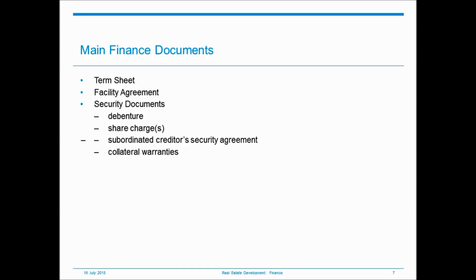The security package will generate several documents. The borrower SPV will sign a debenture, which broadly gives the bank various types of security over various assets owned by the SPV — including most obviously the site itself, the SPV's rights under key documents in the deal, insurances, etc. The JV partners will typically both sign a share charge giving the bank security over shares in the SPV, and will also often give the bank security over the benefit of their subordinated loans advanced into the SPV — what we've called the subordinated creditors security agreement. Collateral warranties are a key set of documents from the bank's perspective, designed amongst other things to give the bank the ability to step in and procure the build-out of the development if things go wrong during construction.